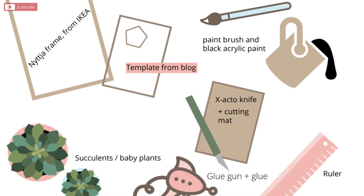You'll also need a tiny paint brush, some black acrylic paint, an exacto knife and a cutting mat, a ruler, glue gun and some baby plants.